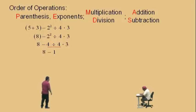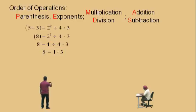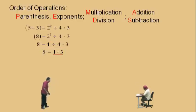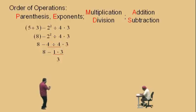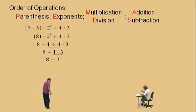8 subtract 1 times 3. Very nice. Now, do we have any multiplications and divisions? Yes. We have a subtraction and a multiplication. Which one do we do first? Multiplication. That's right. And so 1 times 3 — remember, that's not a negative 1. It's 8 subtract 1 times 3, that's how it's written. 1 times 3 is 3. And finally, 8 subtract 3 is 5. There you go. That's our answer.